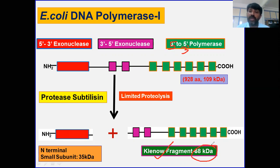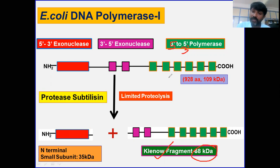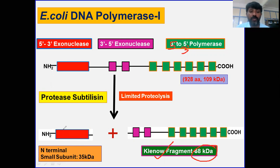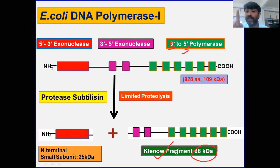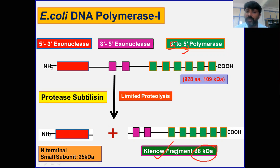To reiterate: when E. coli DNA Polymerase I is subjected to limited proteolysis, it gives two products. The smaller subunit has only 5' to 3' exonuclease activity and a molecular weight of 35 kDa. The larger fragment — the Klenow fragment — has two activities: the proofreading activity (3' to 5' exonuclease) and the 5' to 3' polymerase activity. We will now discuss the applications of DNA Polymerase I and the Klenow fragment in molecular biology and recombinant DNA technology.